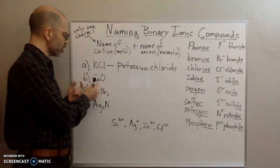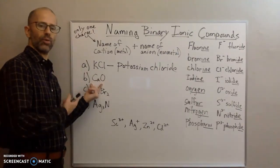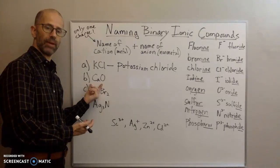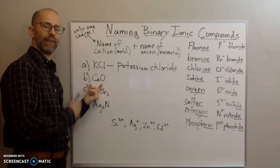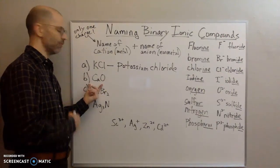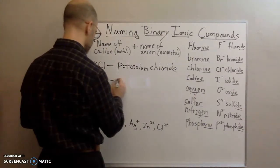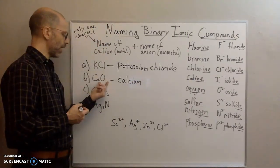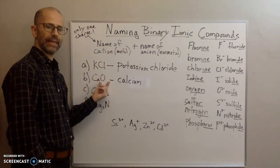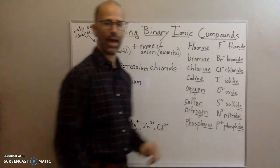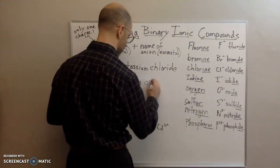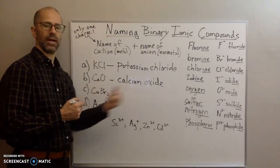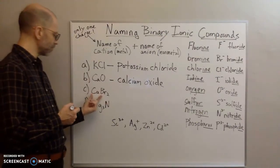For the next example: Ca is calcium, so a Ca²⁺ ion is the calcium ion — drop 'ion' and the first part of the name is simply 'calcium.' The second element is oxygen; drop the ending and add '-ide' and you get 'oxide.' Put them together: the compound is calcium oxide.